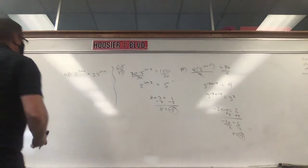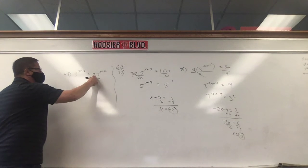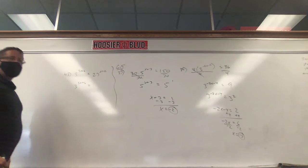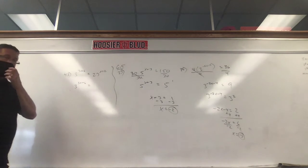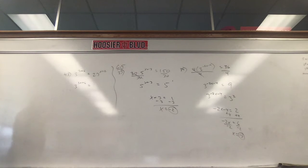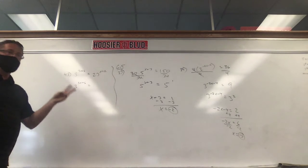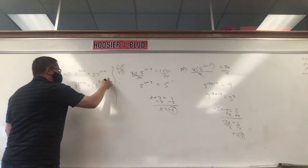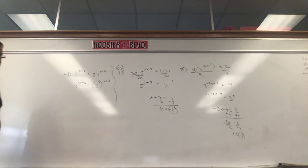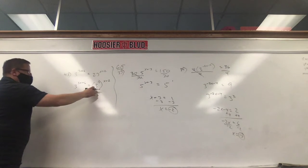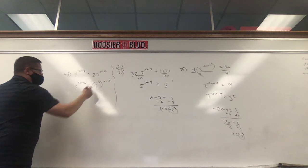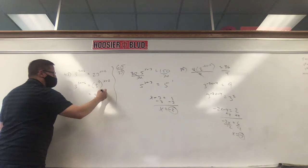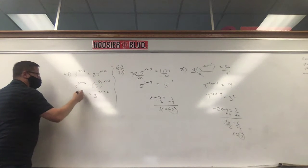So our bases are not the same, but what we can do, though, is I can rewrite 27 as something else. 27, well, I know I would like to have a base of 3. That's the same as 3 times 3 times 3. 3 times 3 is 9 times 3 is 27. And 3 times 3 times 3 is the same as 3 to the third power to the X plus 2. Our bases are the same now. And we have a power to a power, so we multiply them. So 3 to the 3 times X, 3 times 2 is 6. And this is an interesting one here.